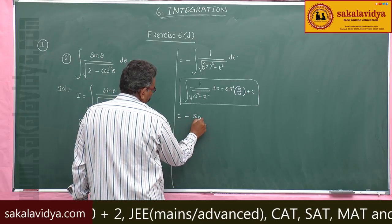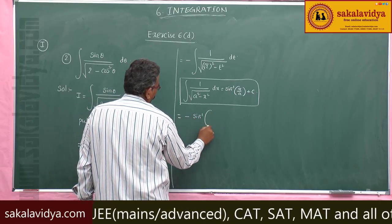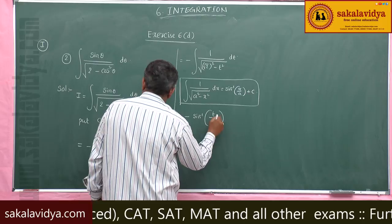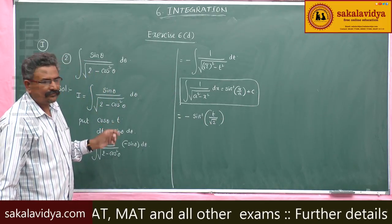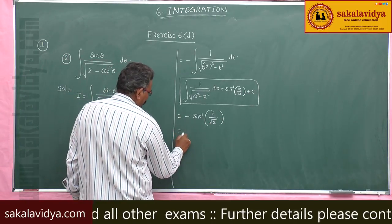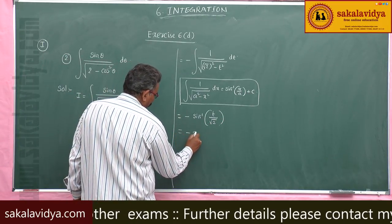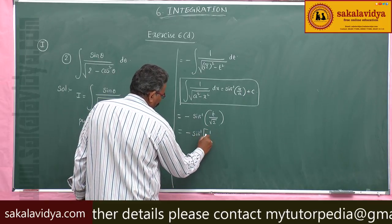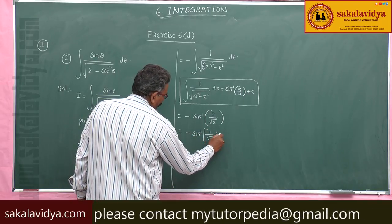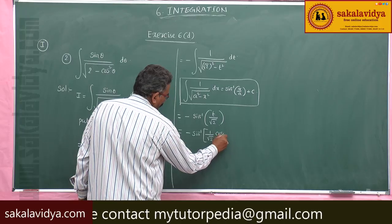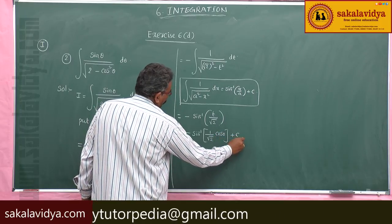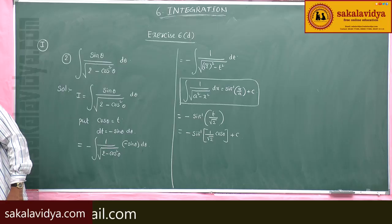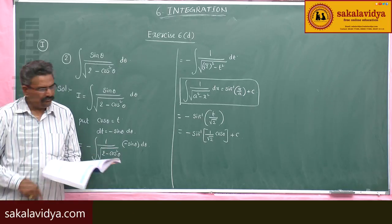Using this formula, the result is minus sin inverse of t by root 2. Since t stands for cos θ, this is minus sin inverse of (1/root 2) cos θ, plus constant of integration. Let us move to the next problem, that is the third problem.